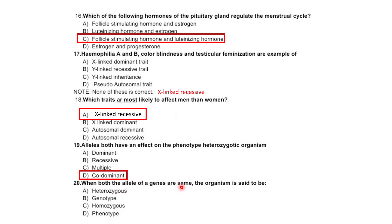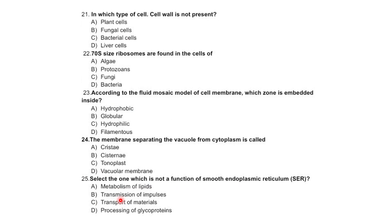When both alleles of a gene are the same, the organism is said to be heterozygotic, homozygotic, or phenotypic — correct option is homozygotic. In which type of cell is a cell wall not present? Plant cell, fungal cell, bacterial cell, or liver cell — correct option is liver cell.